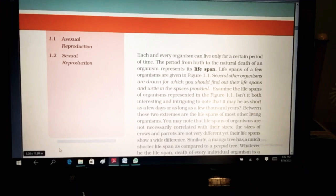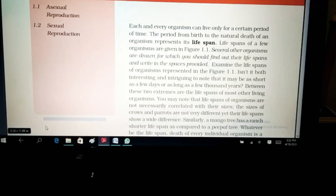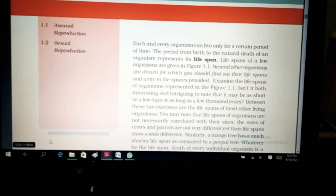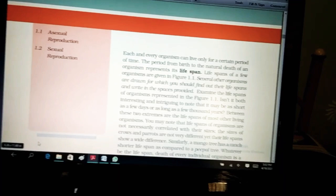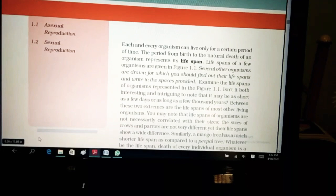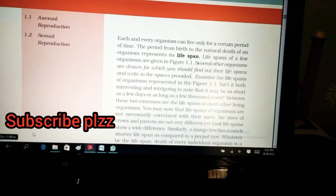The first chapter is reproduction of organisms. Each and every organism can live only for a certain period of time. The period from birth to the natural death of an organism represents its lifespan. So they are saying that every organism lives for a certain period of time and that is called as the lifespan, from when they are born towards their natural death.